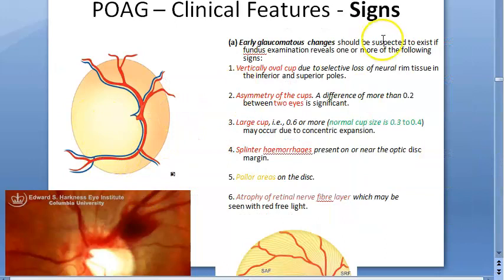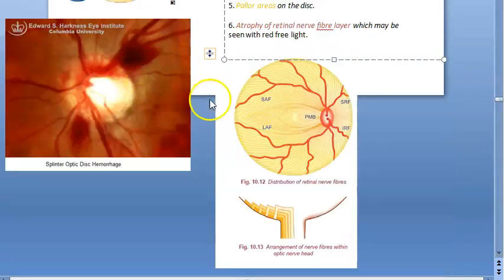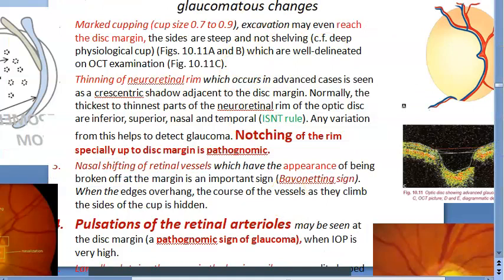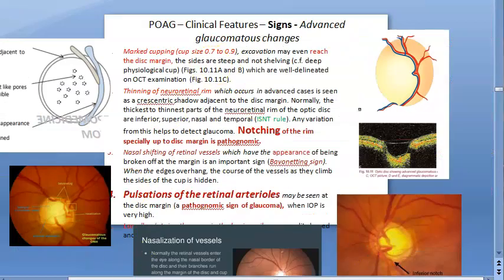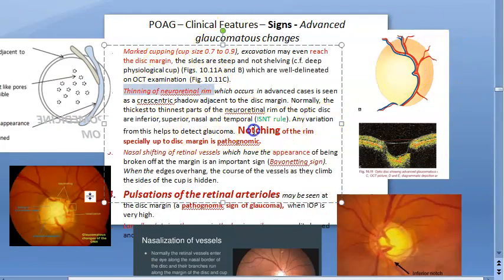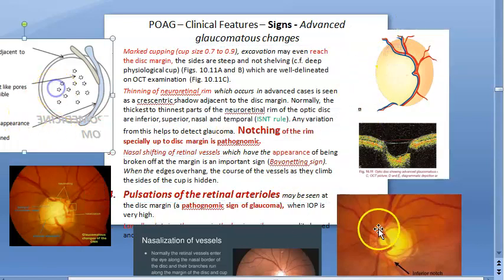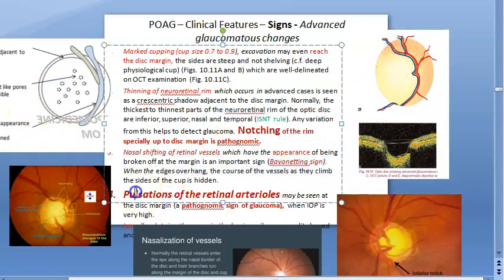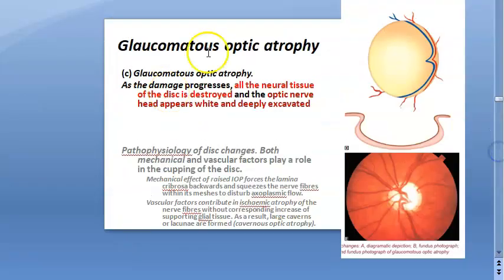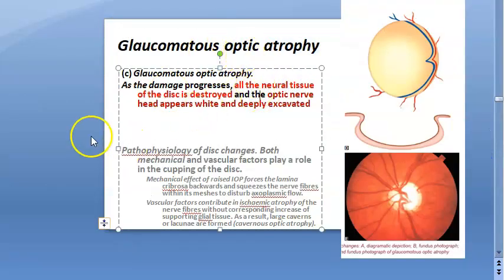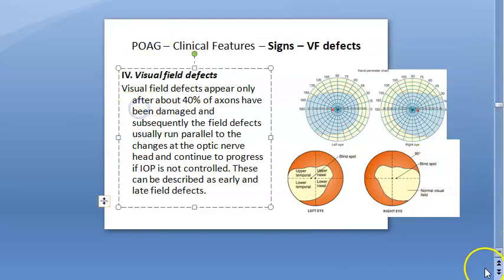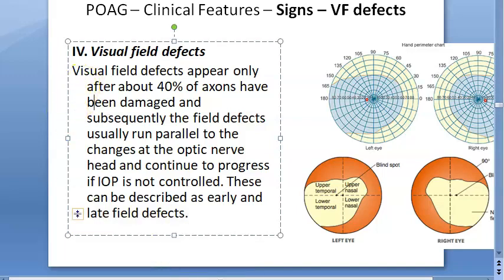Early optic disc changes include oval cup, cup asymmetry, large cup, splinter hemorrhage, pale area, and atrophy of retinal nerve fiber layer. Advanced glaucomatous changes include marked cupping (0.7–0.9), thinning of the neuroretinal rim, notching of the rim especially up to the disc margin, nasal shifting of retinal vessels, bayonetting sign (pathognomonic), pulsation of retinal arterioles, and lamellar dot sign. Finally, this leads to optic atrophy. That is what we have covered so far — now we continue with visual field effects.